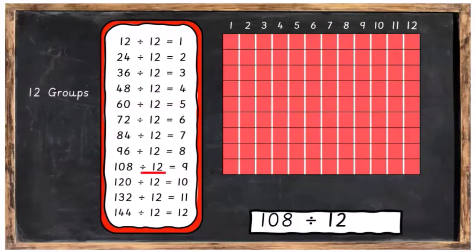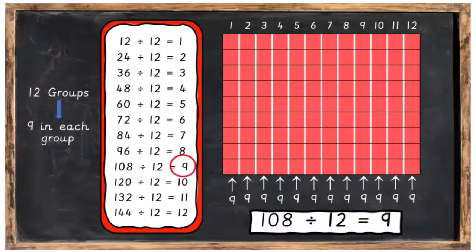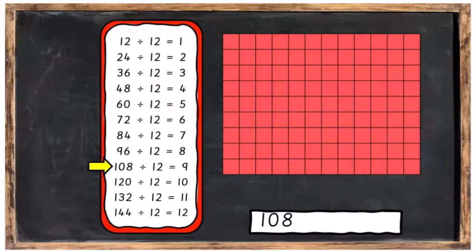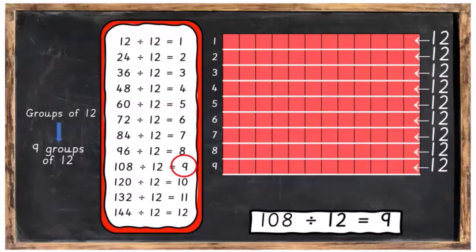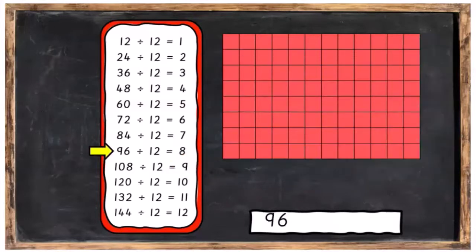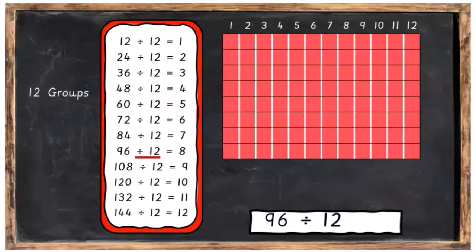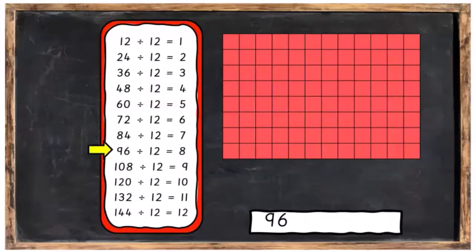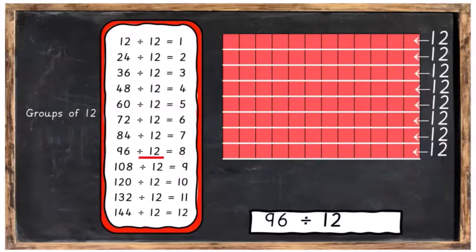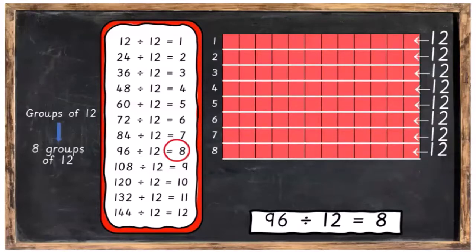108 divided into 12 groups, we're going to have 9 in each group. Or 108 divided into groups of 12 will give us 9 groups of 12. Then 96 divided into 12 groups, we're going to have 8 in each group. Or 96 divided into groups of 12, and we'll have 8 groups of 12.